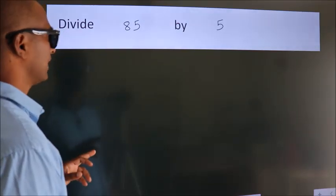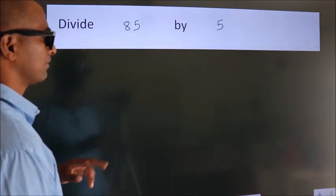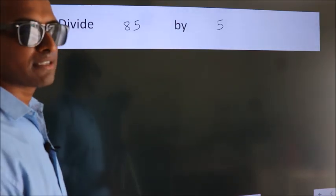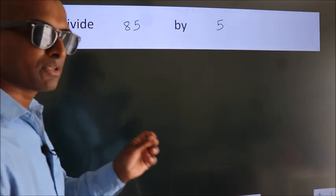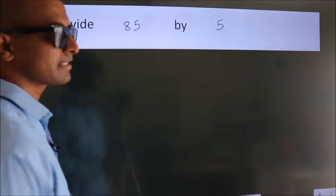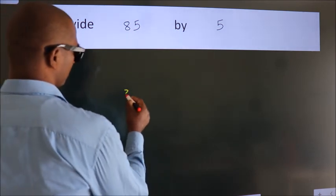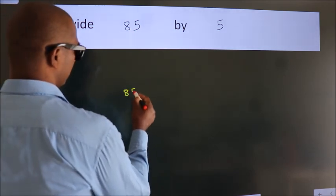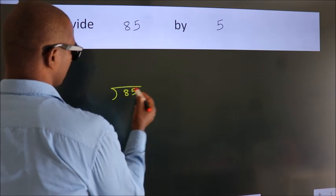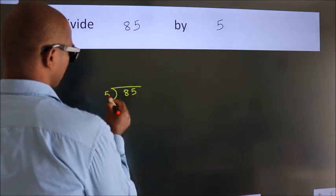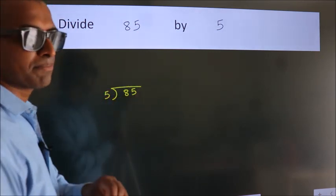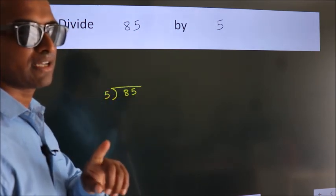Divide 85 by 5. To do this division, we should frame it in this way: 85 here, 5 here. This is your step 1.